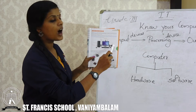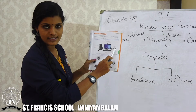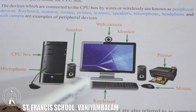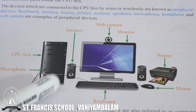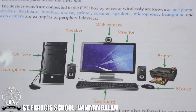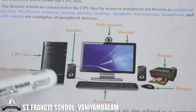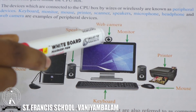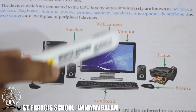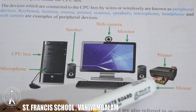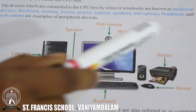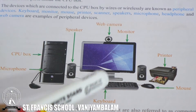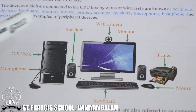These are the hardware devices. You can see here microphone, CPU box, speaker, web camera, monitor, mouse, printer. These are the devices which we can see and touch, and they are known as computer hardware.